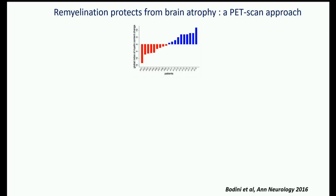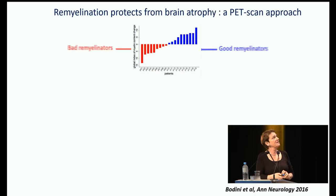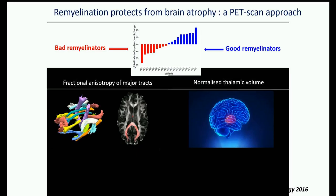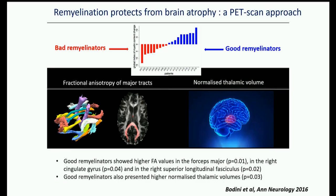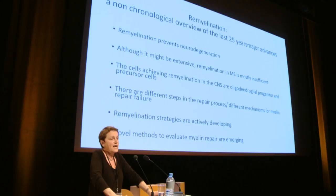Three lines of demonstration — experimental, neuropathological, and in vivo in humans — confirm that remyelination prevents neurodegeneration. This is key because neurodegeneration drives disability progression. Another major advance — largely from Lassmann and colleagues — showed that although remyelination can be extensive, it is in most cases insufficient, with an intraindividual homogeneity in repair capacity, and that remyelinated lesions are preferentially targeted by new demyelinating attacks.